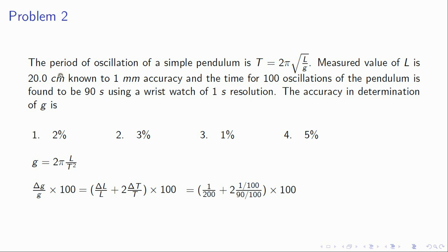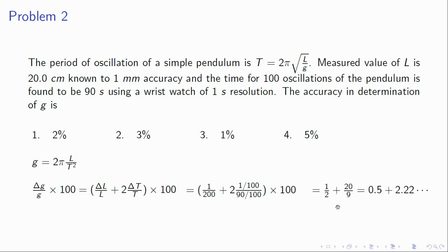Now substitute the values. Delta l is 1 mm, l is 20 centimeters so you convert it to mm — it will be 200 mm. The error in time period is 1 second for 100 oscillations, so for one period it will be 1 over 100 seconds. The time period is 90 seconds for 100 oscillations, so for one oscillation it will be 90 by 100. This will become half, and the 100s will cancel, giving 20 by 9. So this will be 0.5 plus 2.2, which is around 3 percent. Option 2 is right.